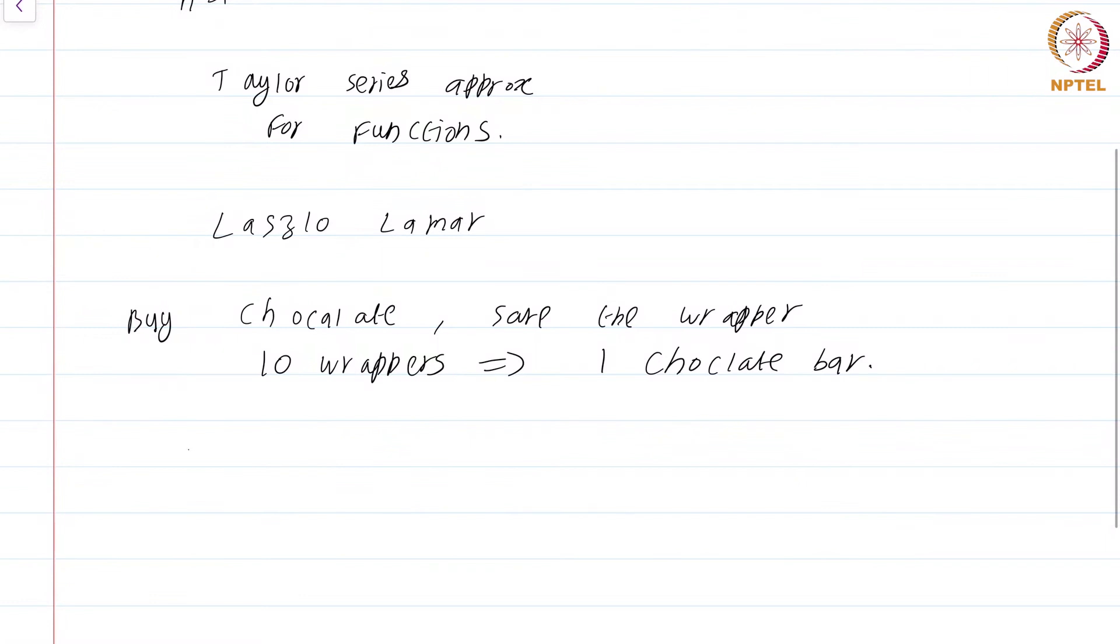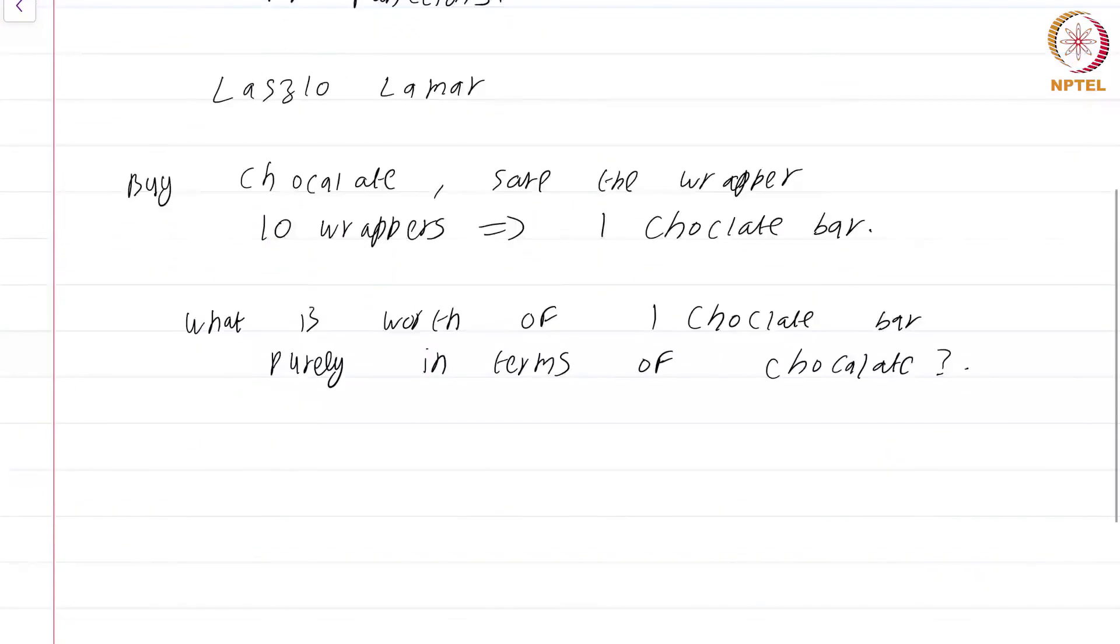Now, the question is very simple: What is the worth of 1 chocolate bar purely in terms of chocolate? Let me clarify what I mean by this question. A chocolate bar comes with a wrapper. Obviously, you cannot eat the wrapper, but returning 10 wrappers to the shopkeeper gives you another chocolate bar. That means a single chocolate bar is not worth just 1 chocolate bar of pure chocolate, but a fraction of another chocolate also. So, 1 chocolate bar is actually, in terms of pure chocolate, the 1 chocolate bar that you have, the chocolate in it, plus 1 tenth of a new chocolate bar.